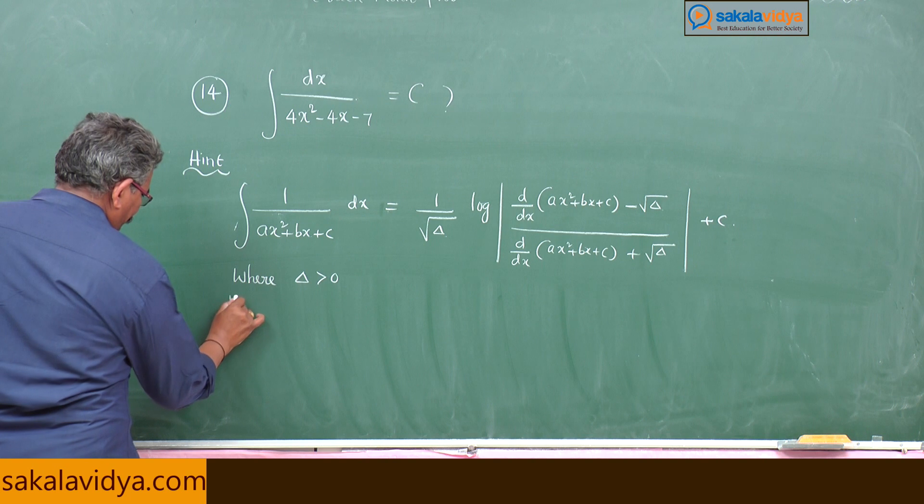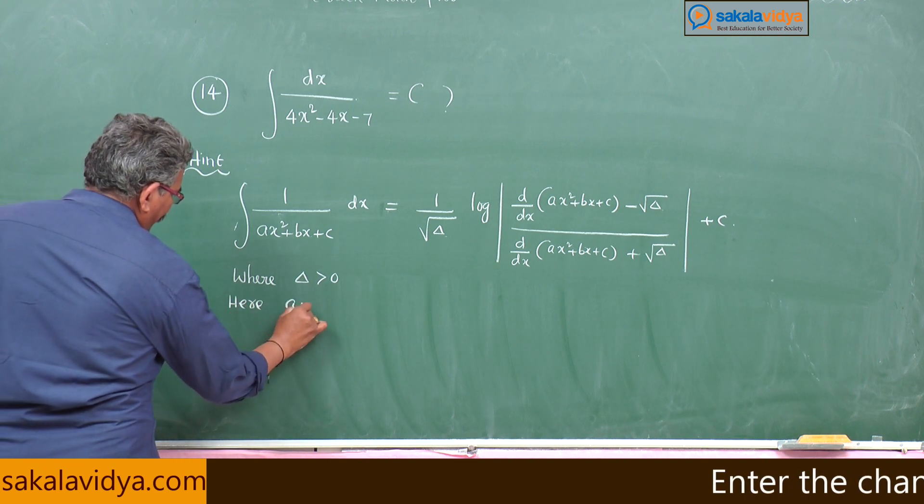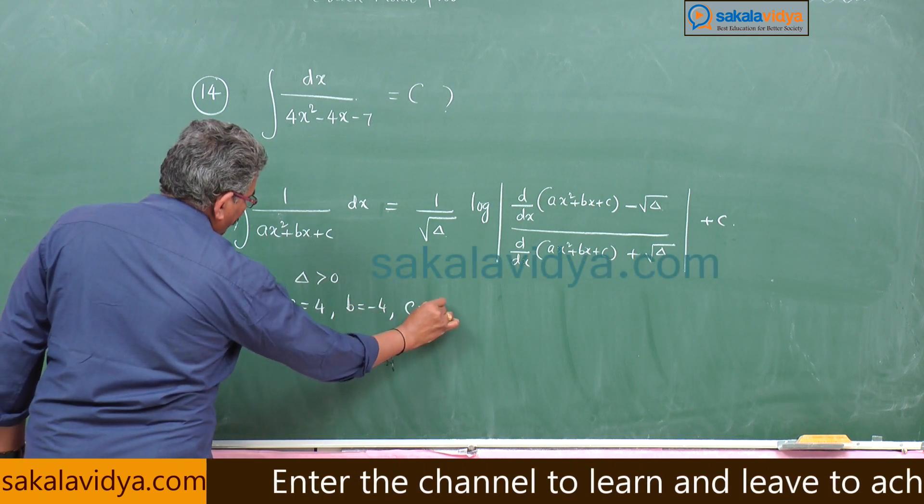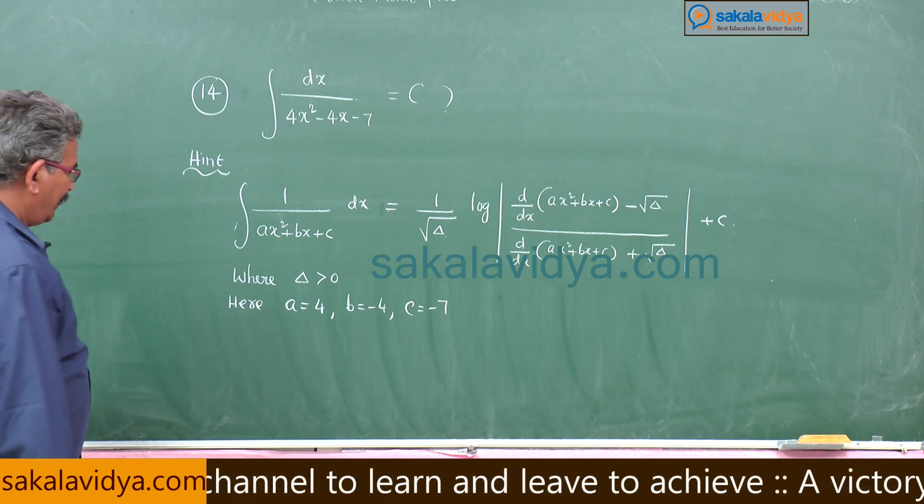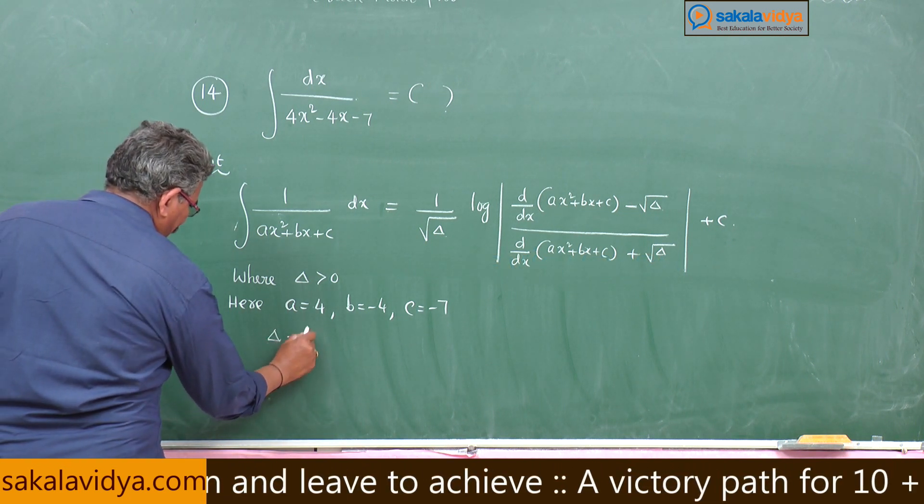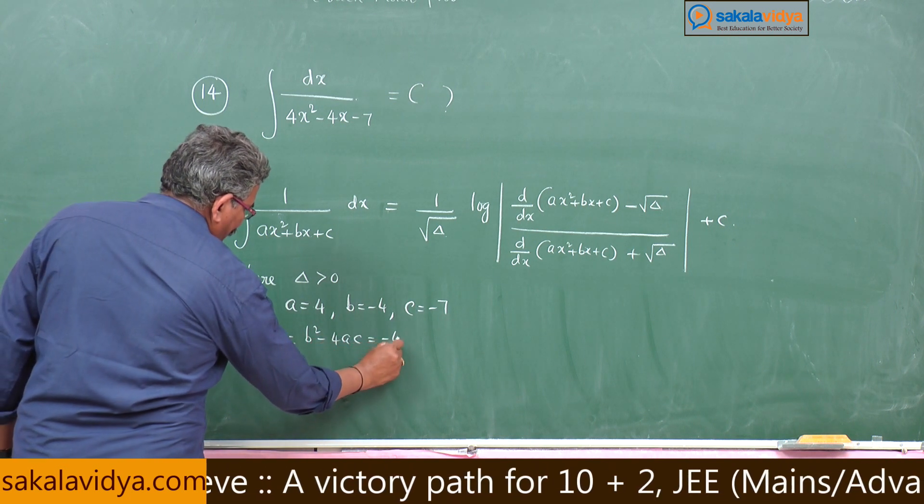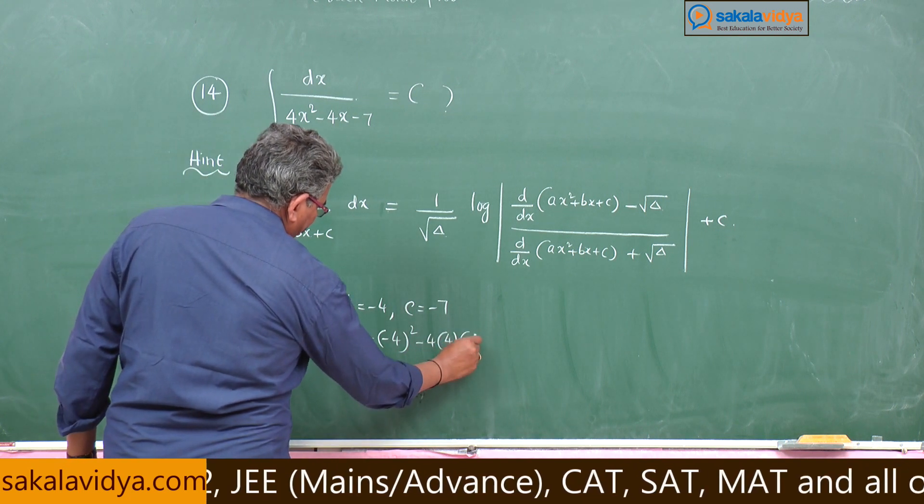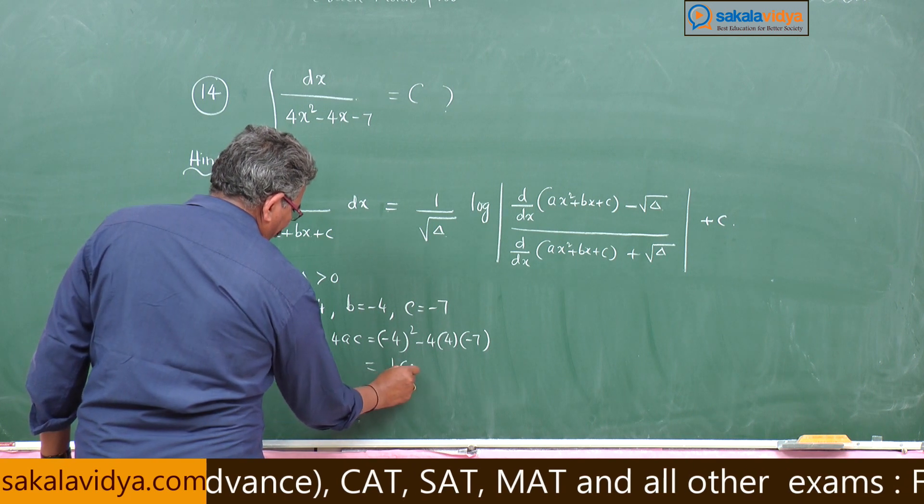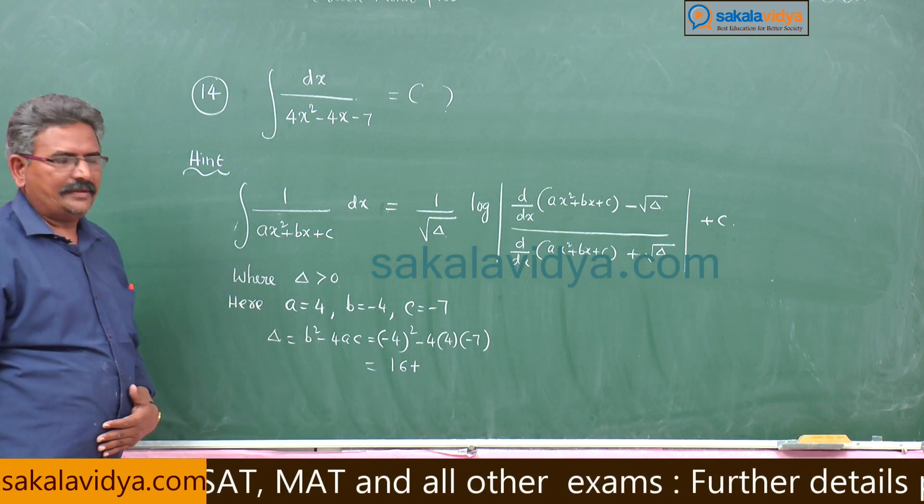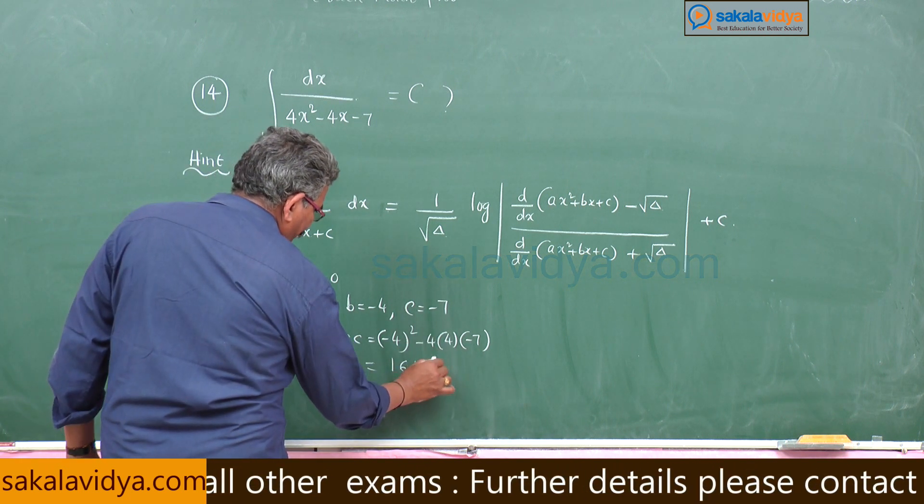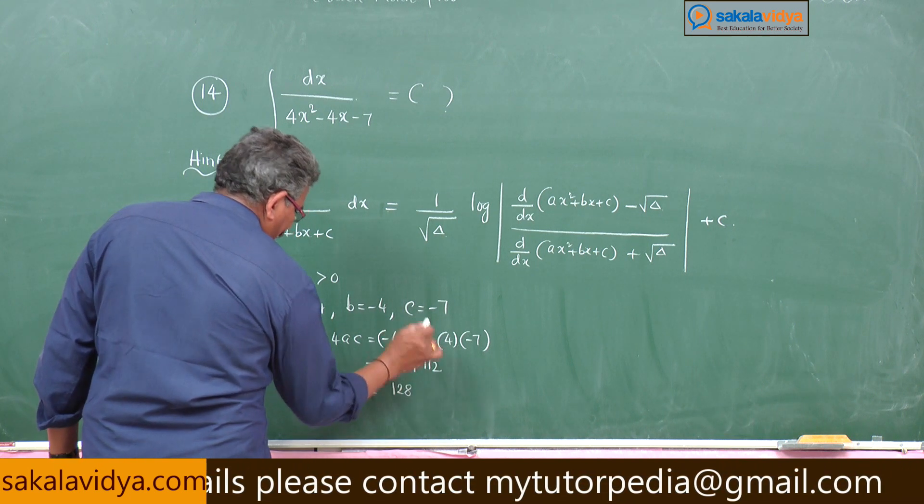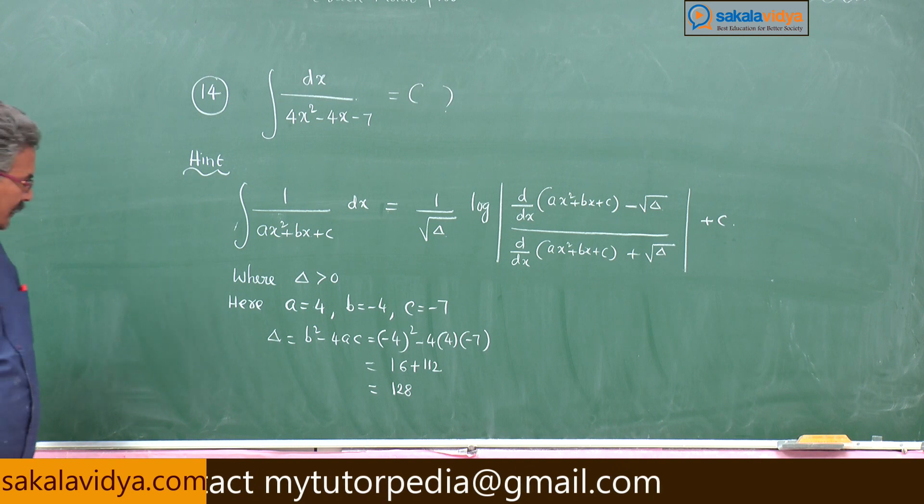Here a equals to 4, b equals to minus 4, c is equal to minus 7. Let us find out delta, delta is b square minus 4ac. So minus 4 square minus 4 into 4 into minus 7, 16 plus 16 into 7, 16 into 7 is 112, this is 128. Delta is 128.